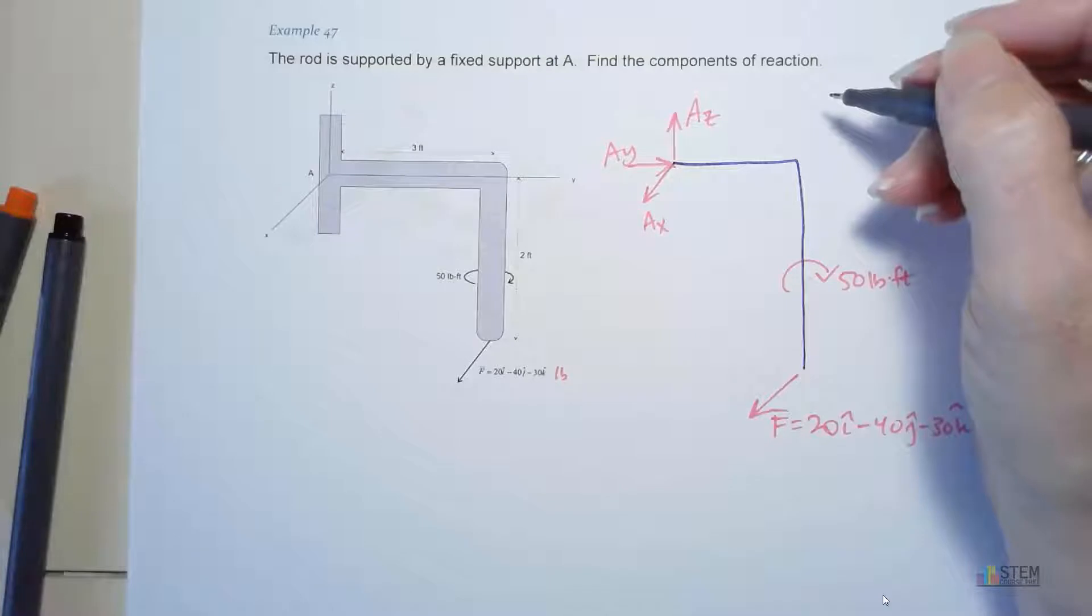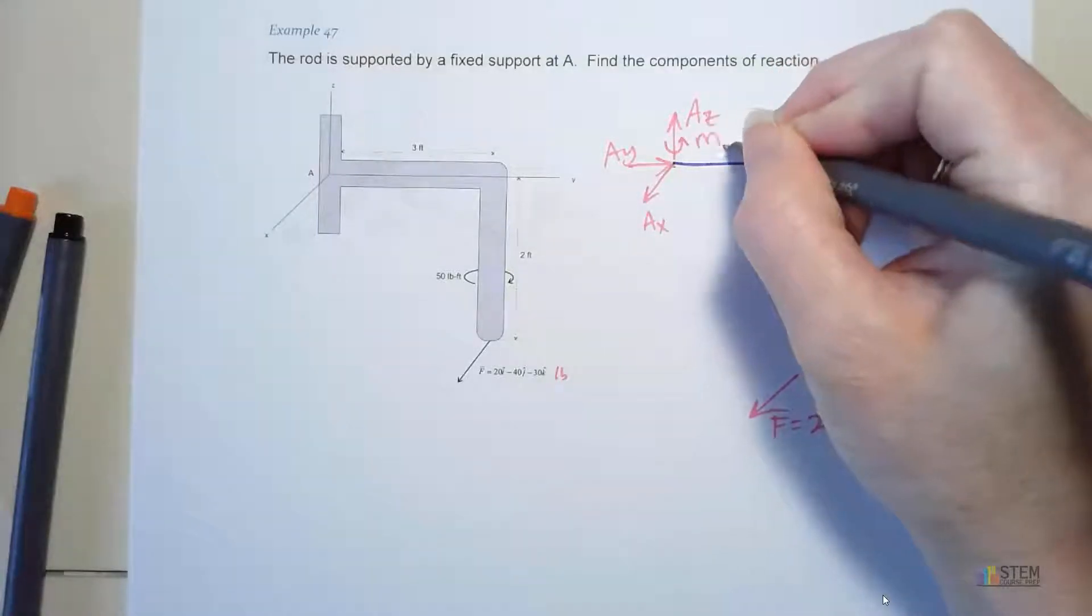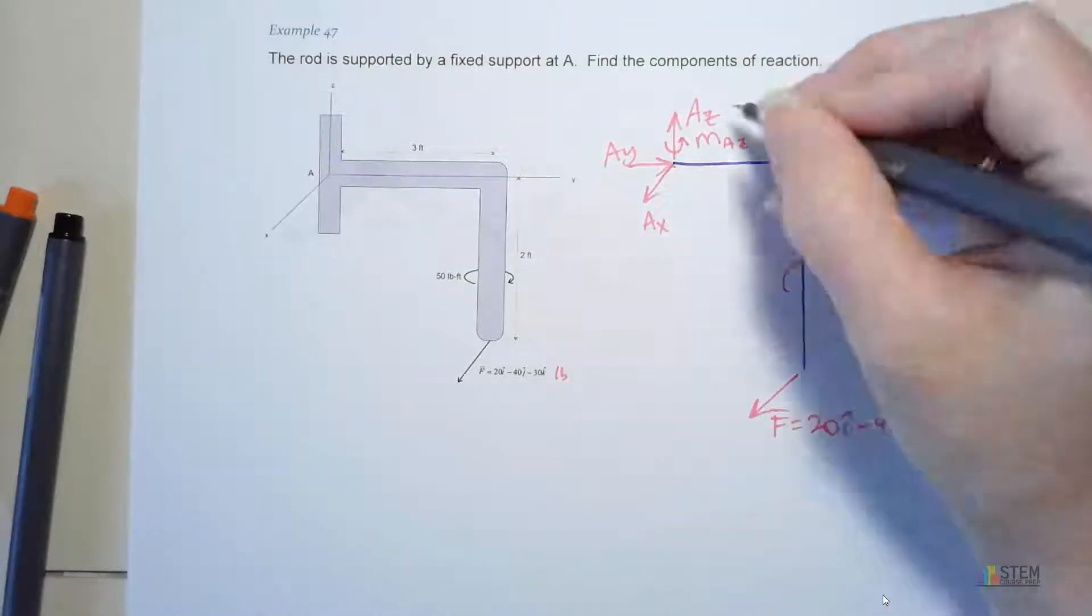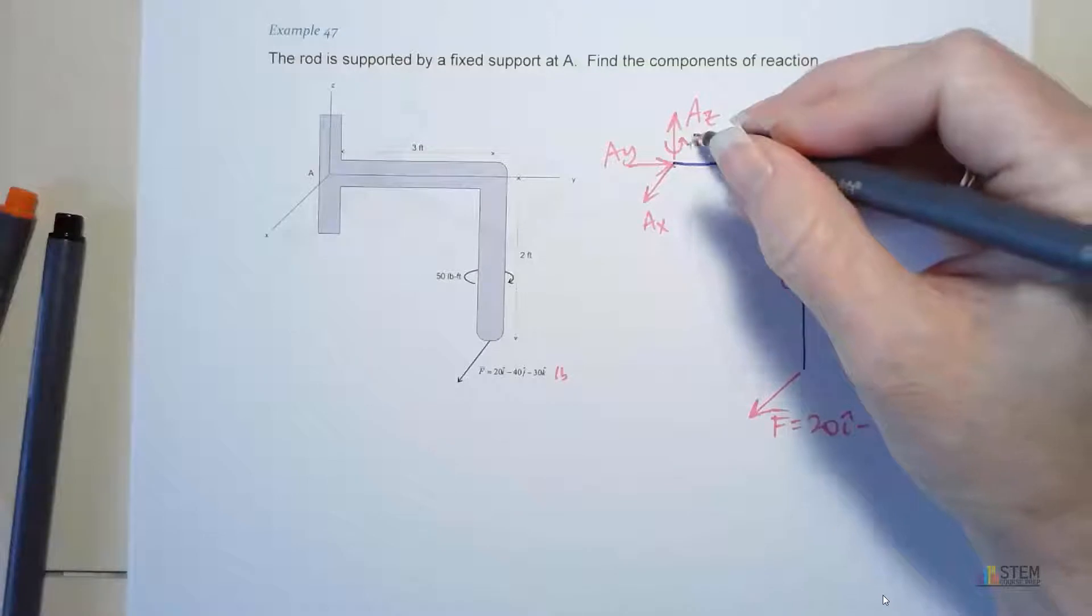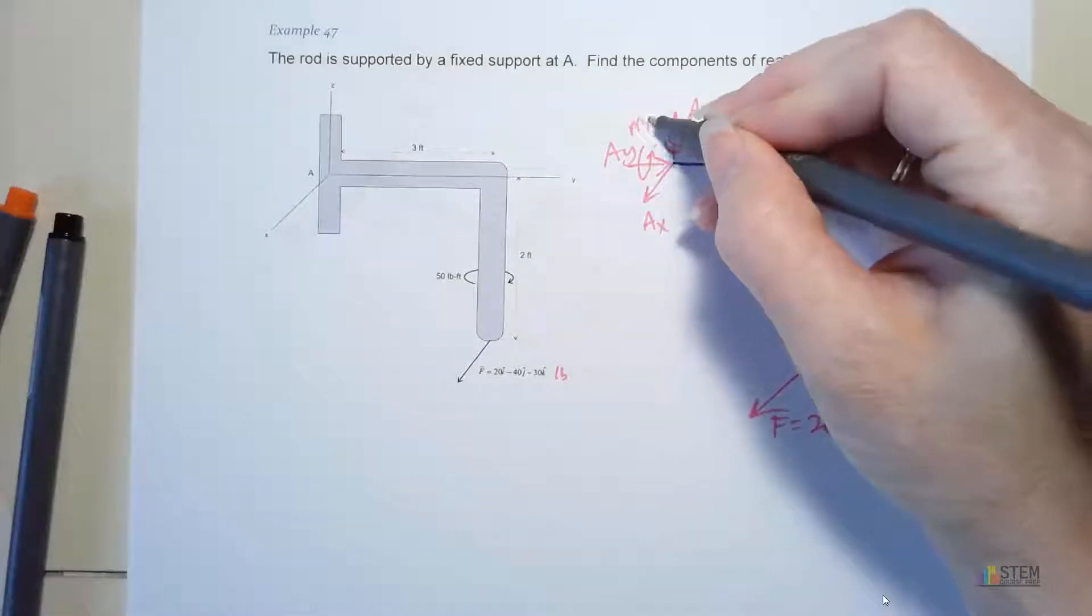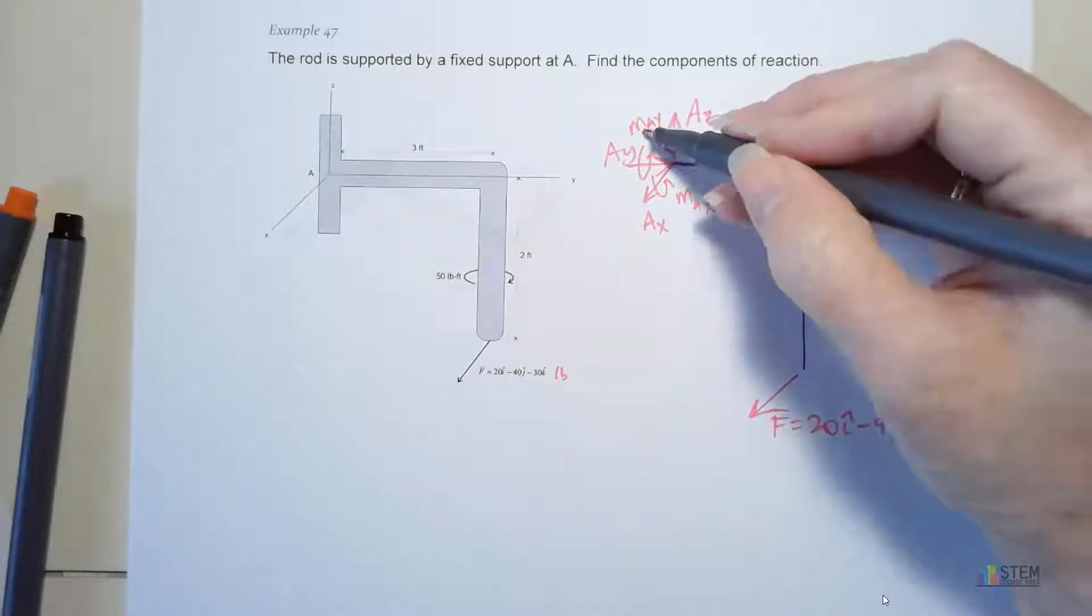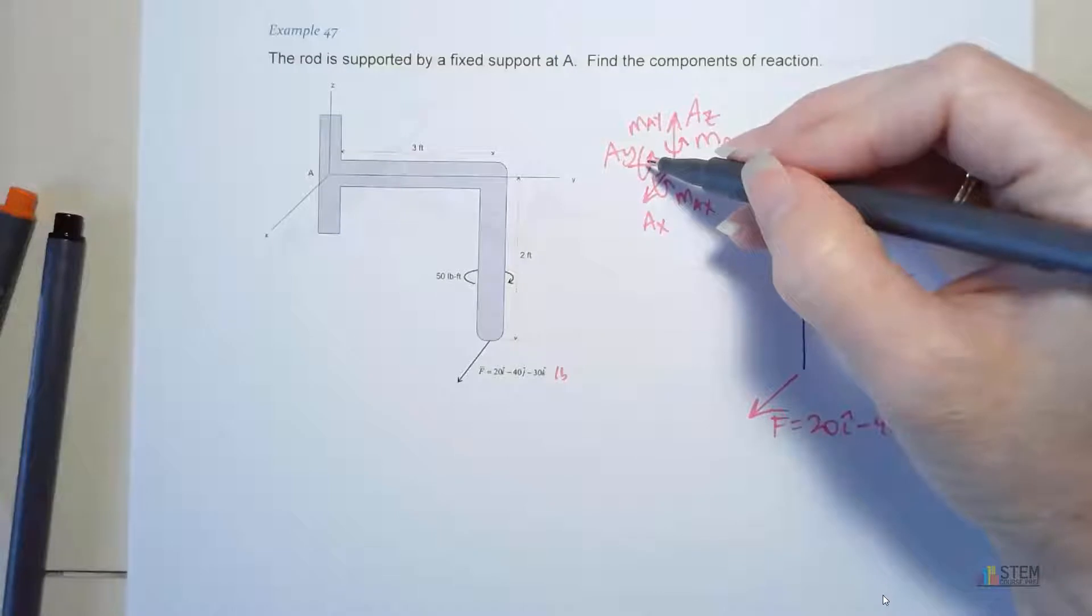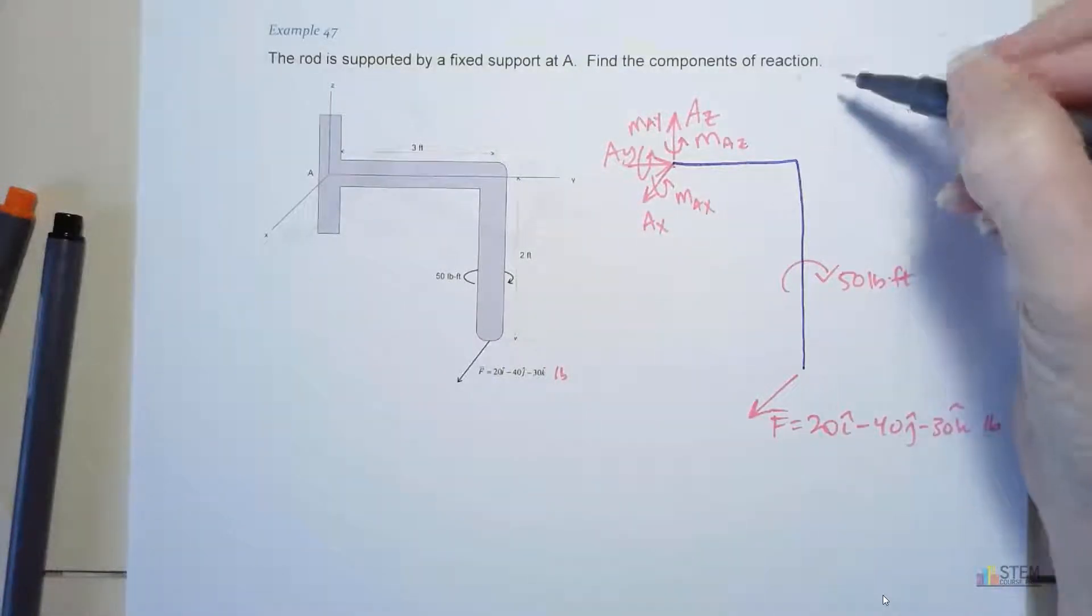Now I need to prevent rotation. And I don't want rotation about any of the axes. That means our support is going to produce a moment about the Z axis. This couple moment here counteracts any other moment that we would have about the Z axis. Cancel it out. Do the same thing with the Y axis, so we'll have MAY and then the X axis, so MAX. So again, this one here gets rid of any moments about the Y axis. This couple moment here will prevent any rotation about the X axis.